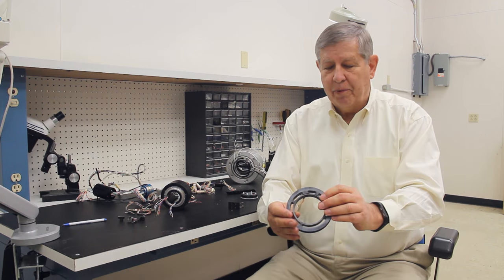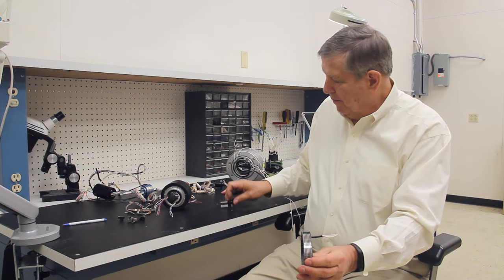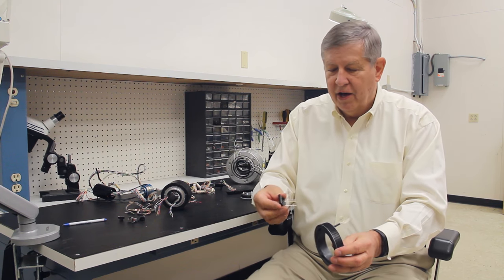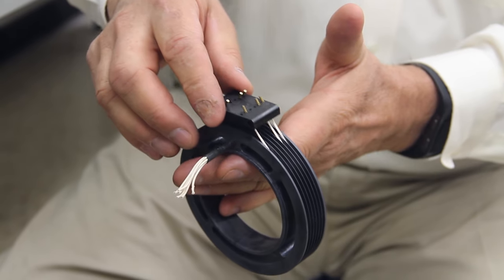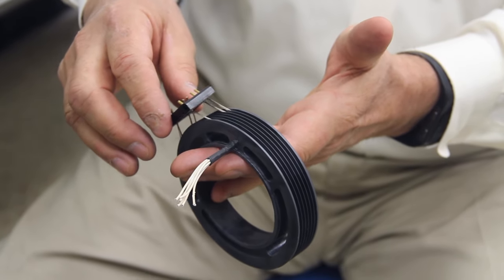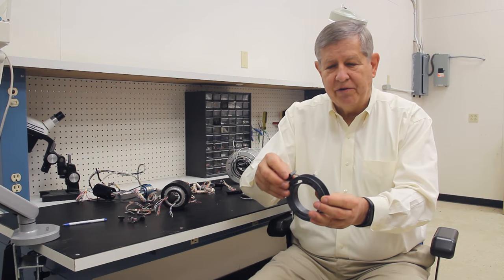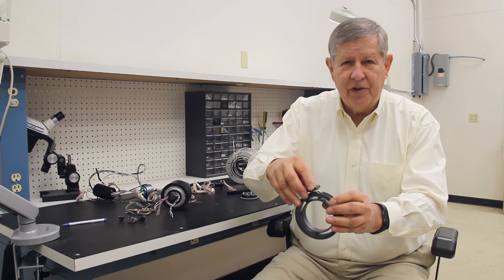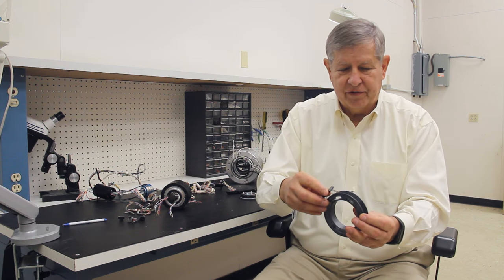This is a slip ring module with discrete rings and this is an example of the brush block. The brush block rides on a slip ring and these sliding electrical contacts are what provides the transfer of signal and data from the stationary to the rotating side with sliding electrical contact. So this is the heart of the slip ring assembly.